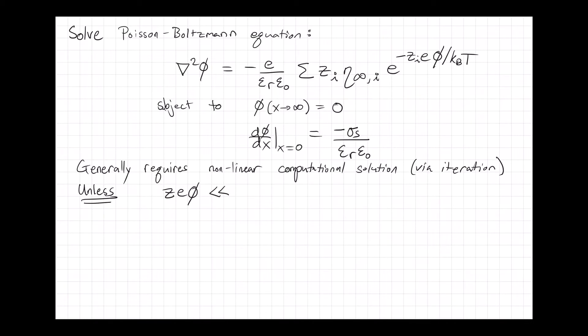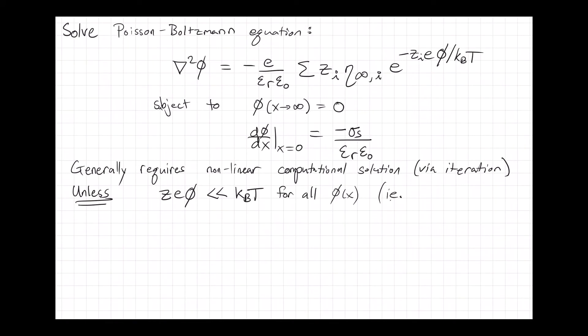If it turns out that the electrostatic potential is small relative to the temperatures that you're working at all the way up until the surface. So typically the largest value, at least the largest absolute value of the electrostatic potential would be at the surface.